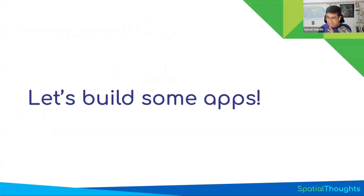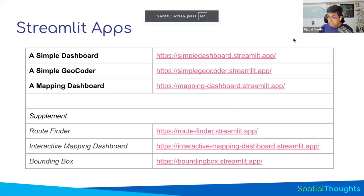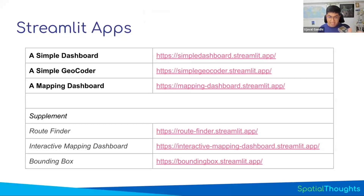Let's get started and build some apps. I want to show you a preview of what we're going to build. In this course, we're going to learn how to build three apps step by step. We'll start learning Streamlit by building a simple dashboard — a geocoding app — and once we know how to do that, we'll build a mapping dashboard integrating maps and dashboard together.